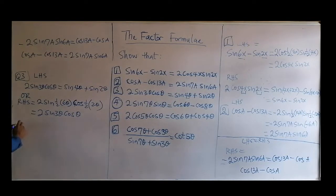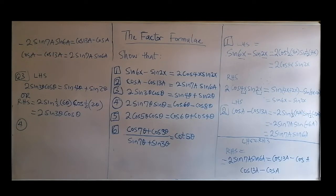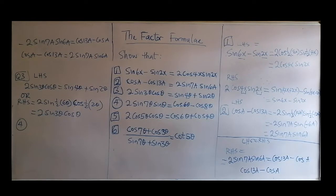Number four. We have a product of sines. Without wasting time, I'm going to go from the right to the left-hand side. On the right-hand side, when you have sine times sine, that will become cosine minus cosine.